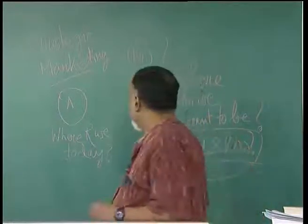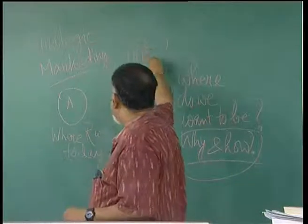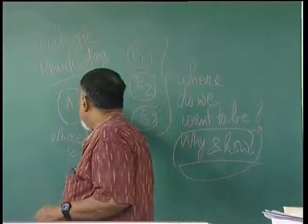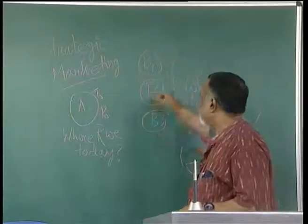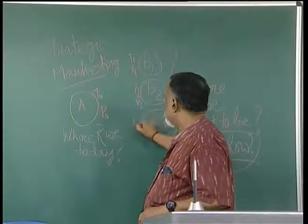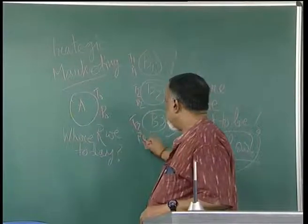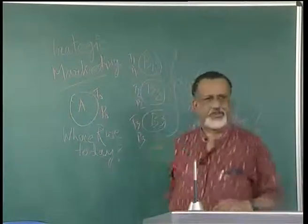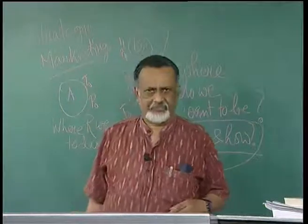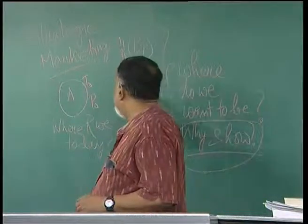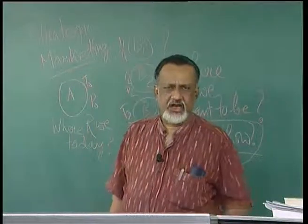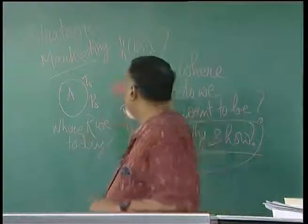Where do we want to be could be several positions — B1, B2, B3. Earlier, if you remember, we talked about t0, p0. So this could be t1/p1, t2/p2, t3/p3. These could be various options with respect to our strategic objectives to be achieved at different points of time — the same time period like the next 24 months or 3 years, or they could be different intervals.